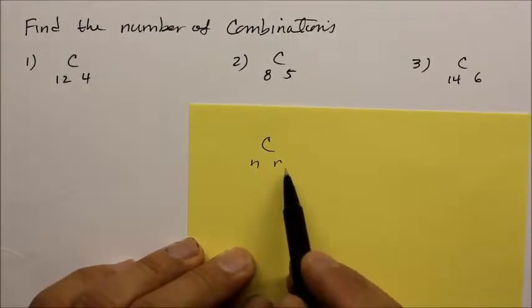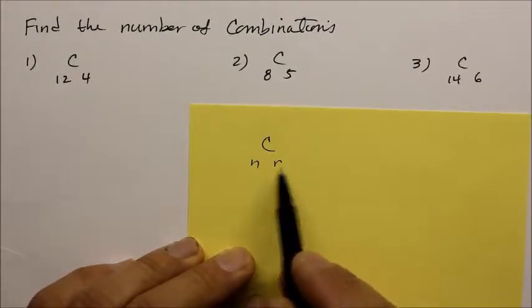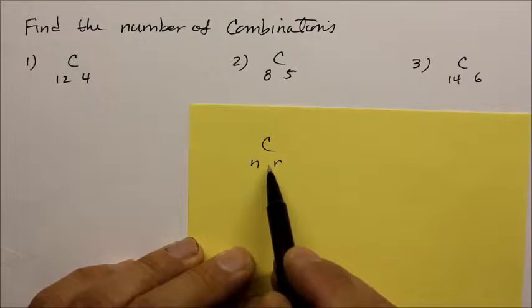Sometimes we call this the combination of n choose r. In this case, we don't care about the order of the object that we're choosing unlike permutation. It doesn't matter what order they come in.